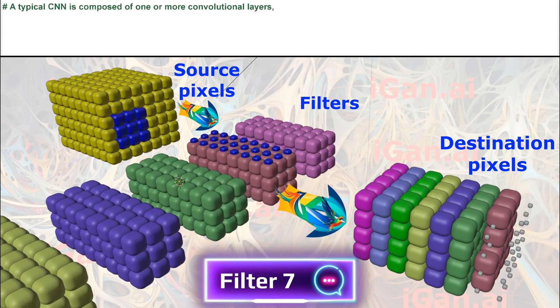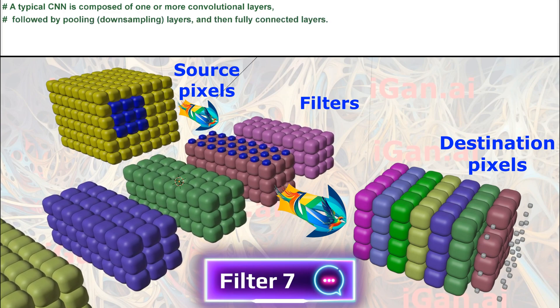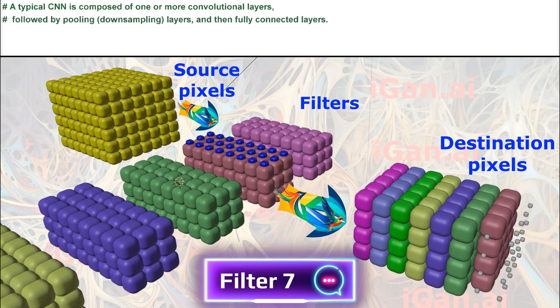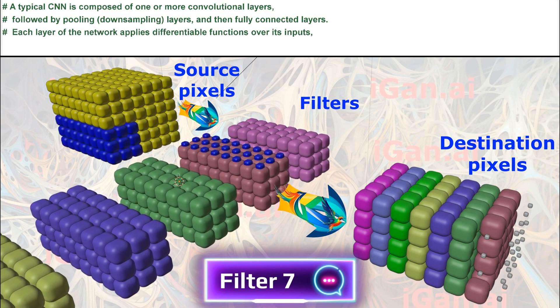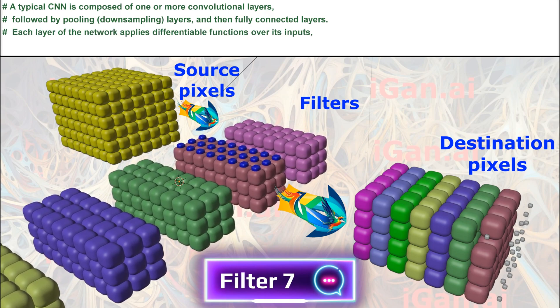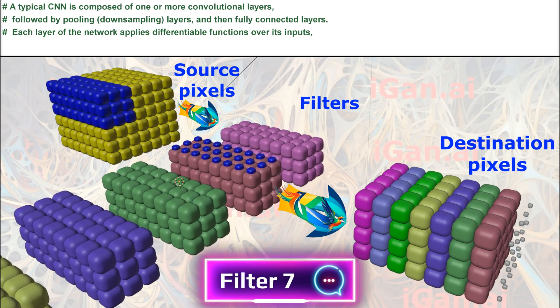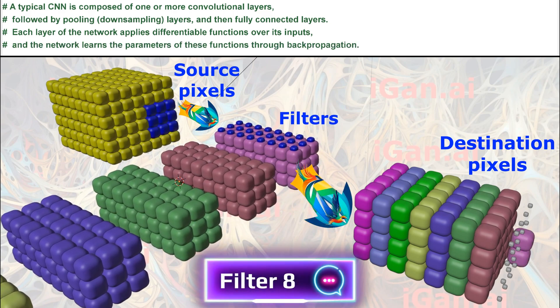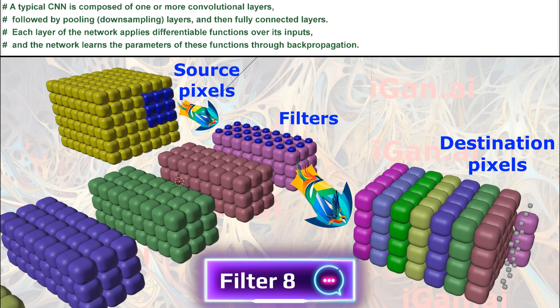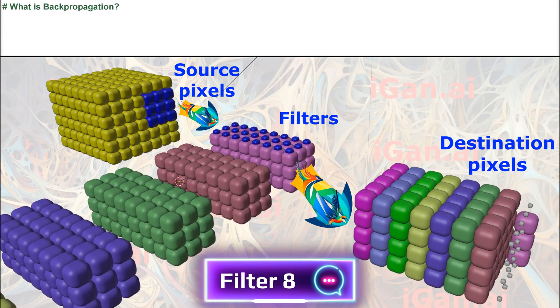A typical CNN is composed of one or more convolutional layers, followed by pooling (downsampling) layers, and then fully connected layers. Each layer of the network applies differentiable functions over its inputs, and the network learns the parameters of these functions through backpropagation. What is backpropagation?